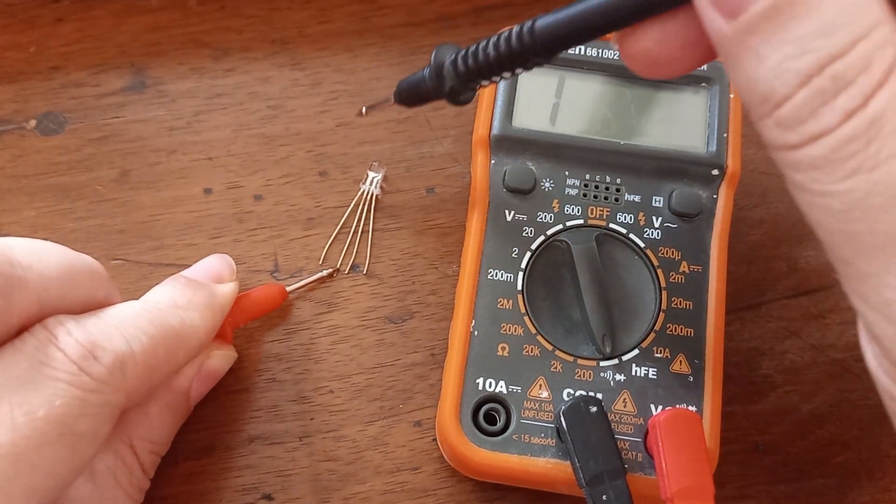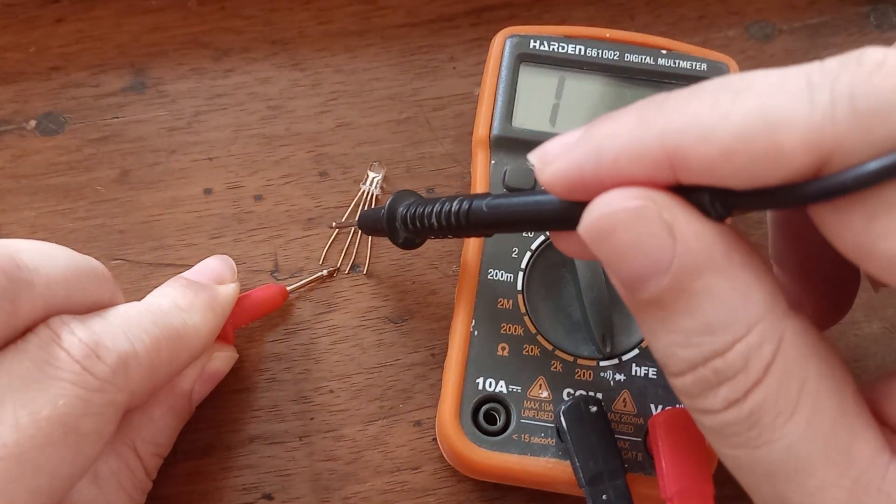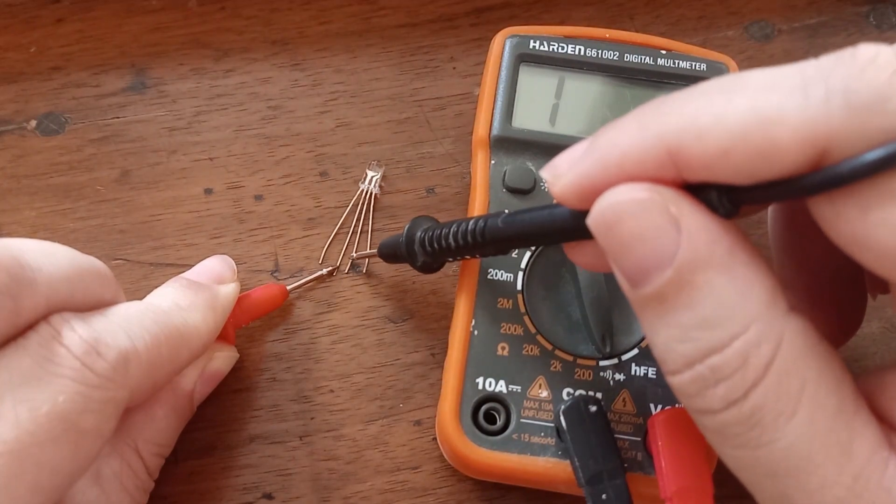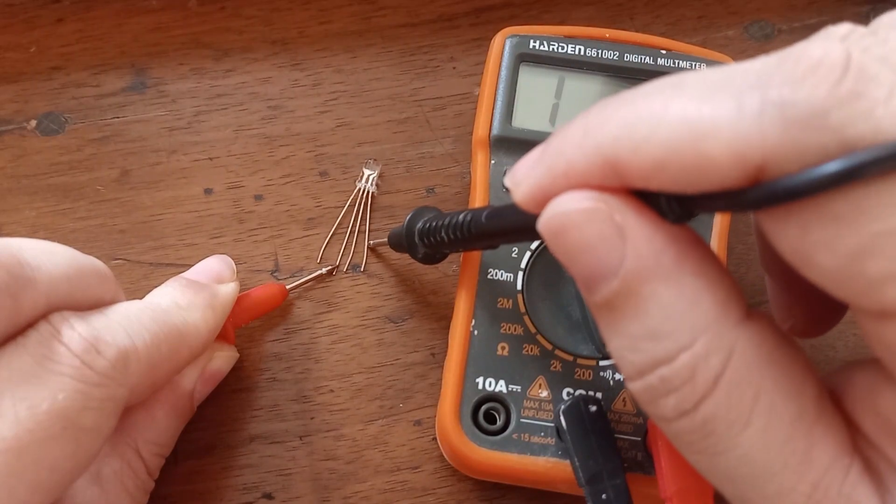And now if this is common anode, we are going to get red light on this diode. But there is nothing. Now I am going to press green pin, nothing. And finally I am going to press blue pin, nothing.